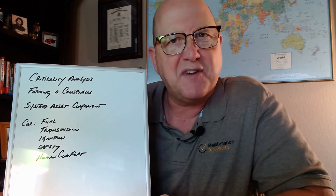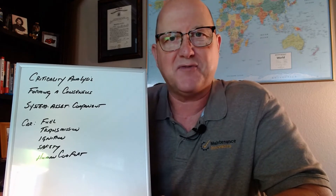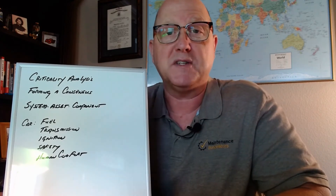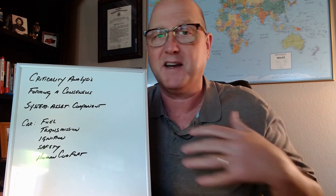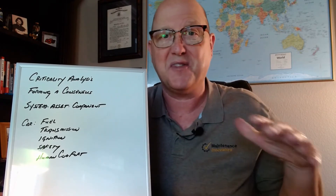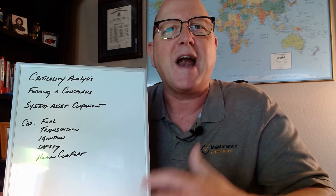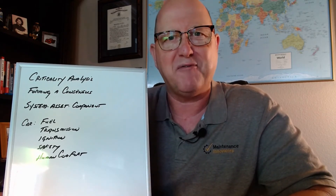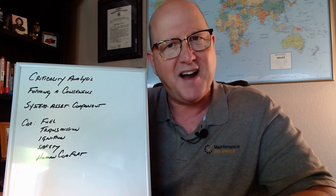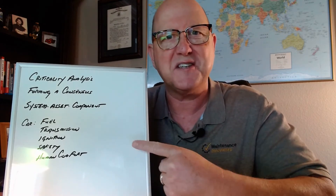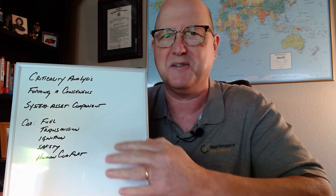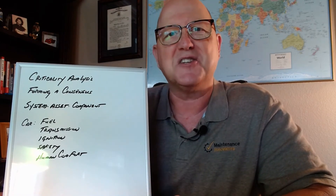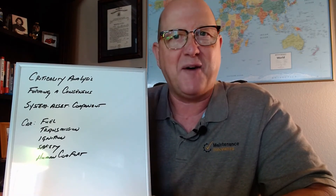I always thought it was very interesting that as far as critical systems and critical components with just a regular car — and I'm talking to non-gearheads like myself, I don't know anything about cars — just your average person, the only spare part that they have for a car is a tire. Isn't that interesting? Of all the systems, of all the assets in these systems, of all the components that could possibly go wrong, it's the spare tire that we have.